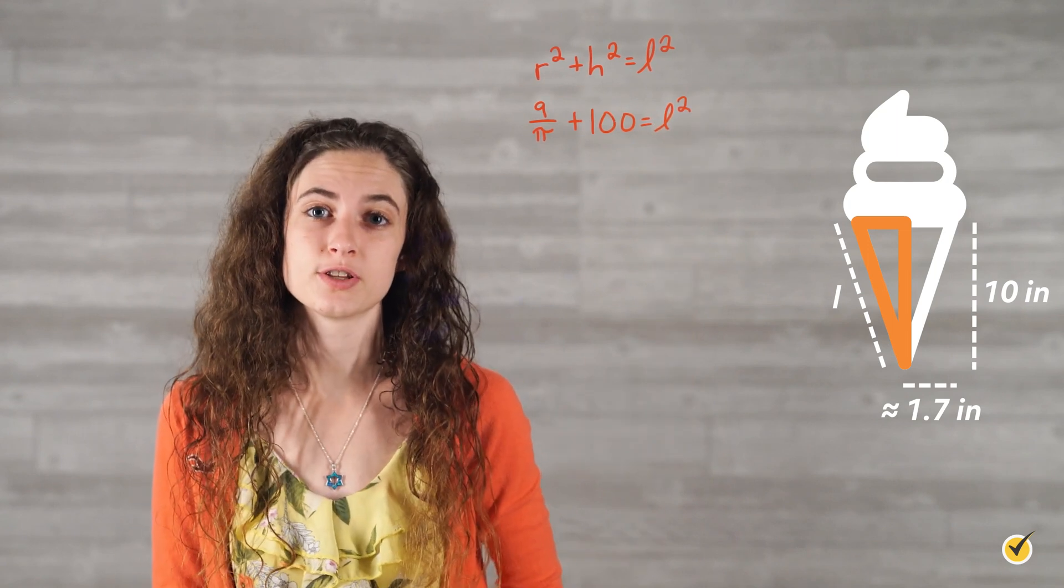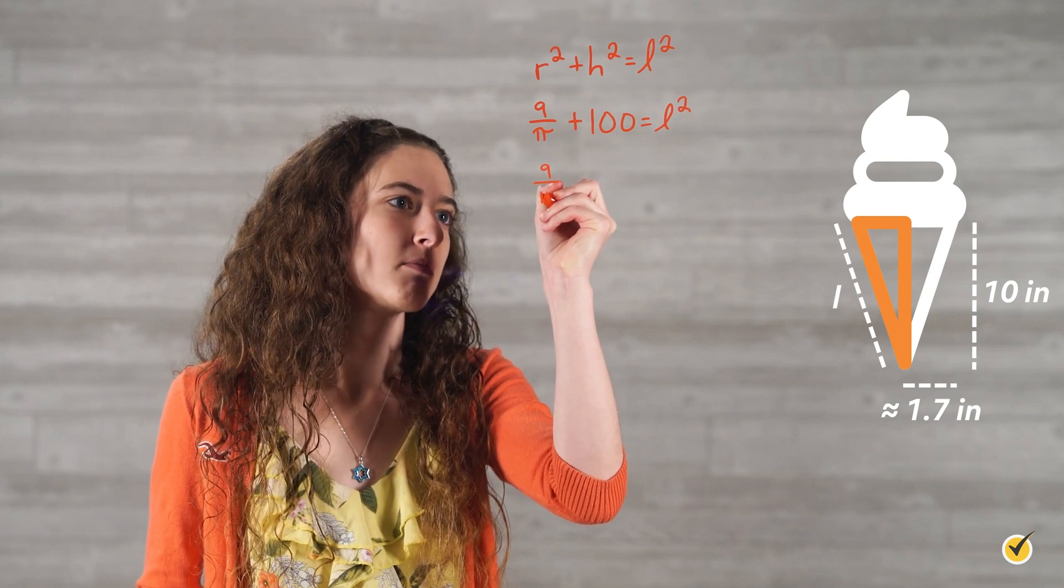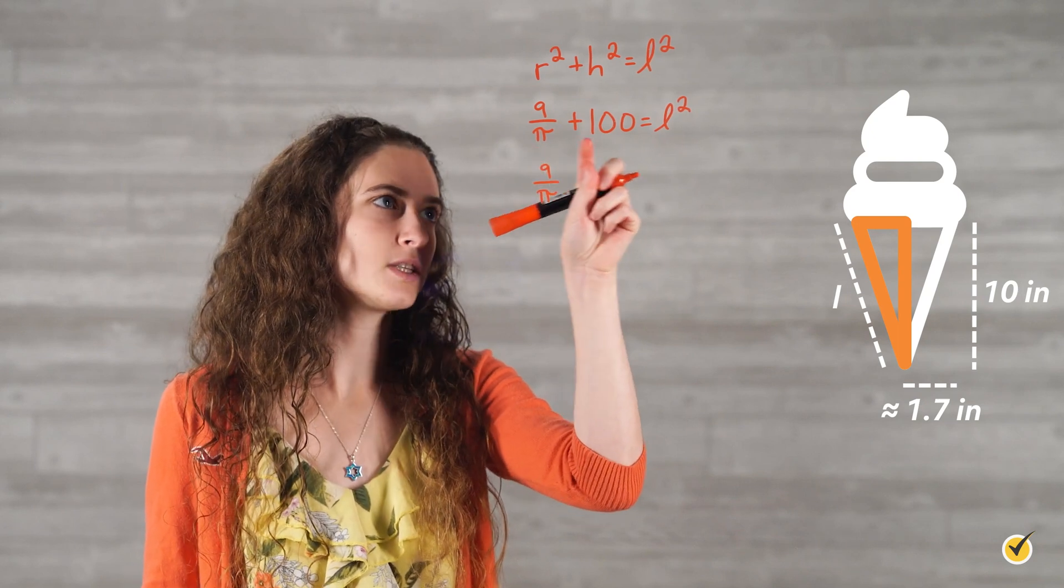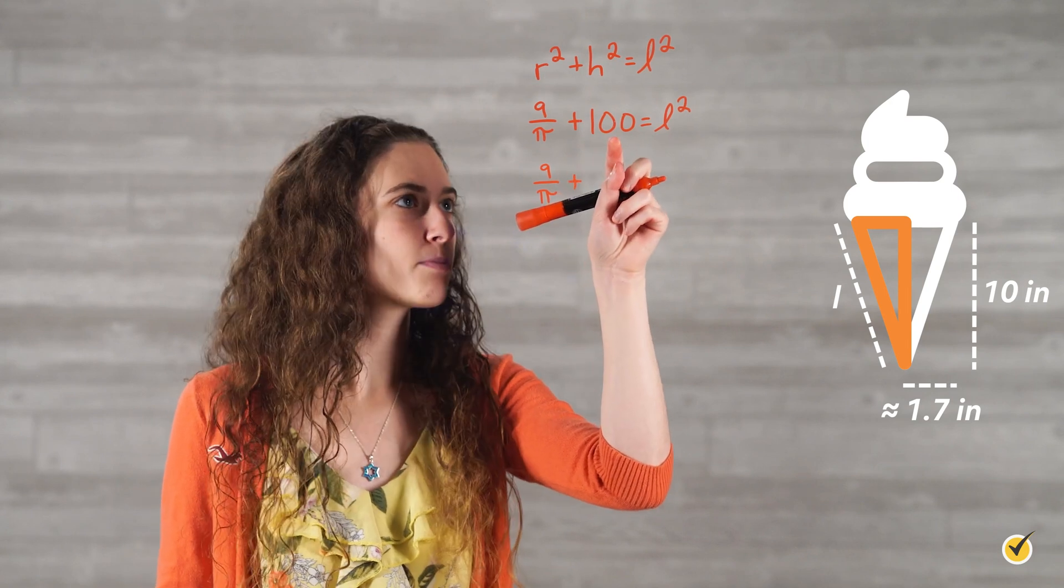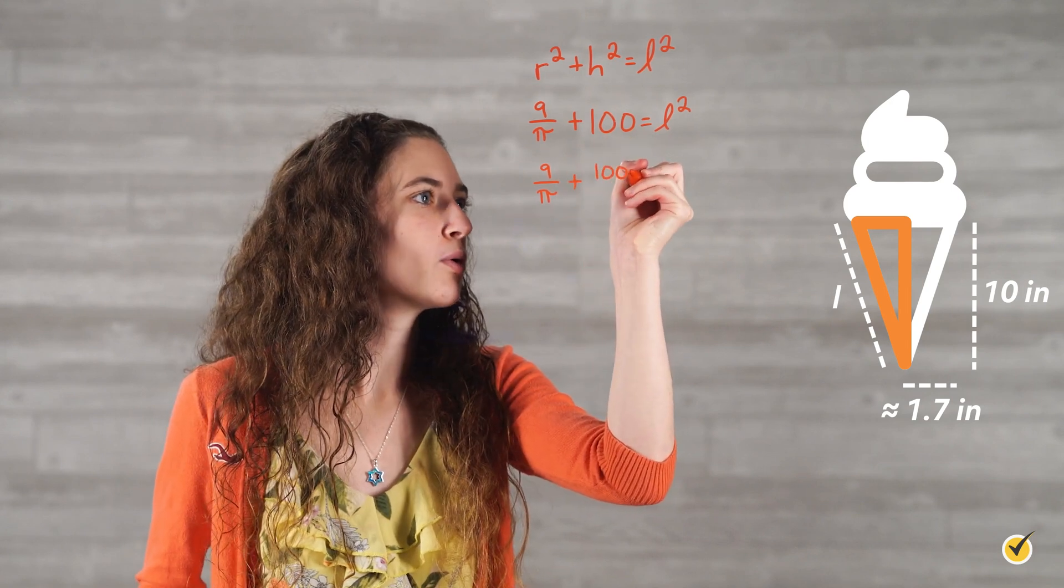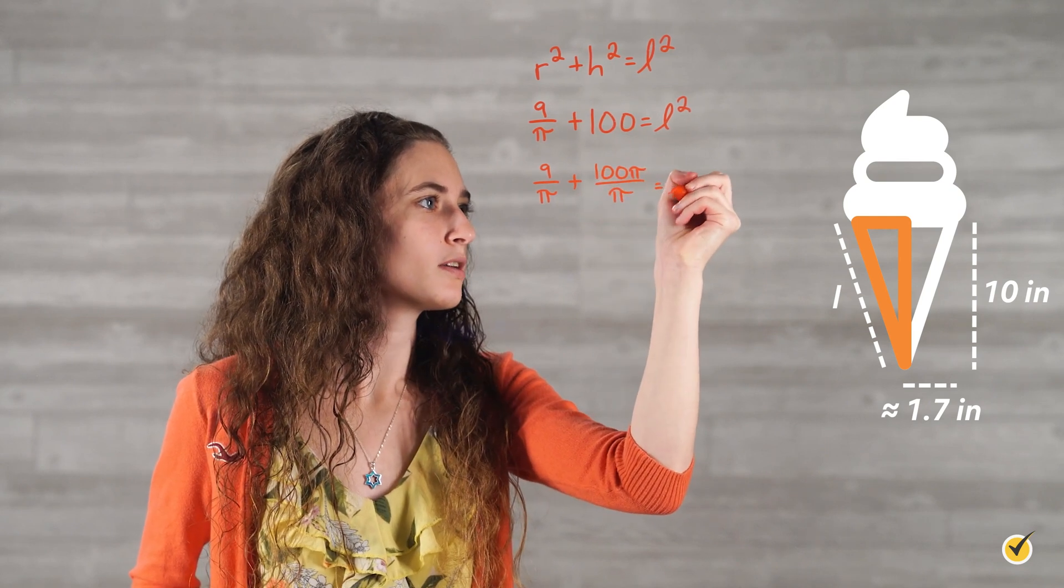Now, we're going to want to simplify our addition on the left side. We're going to keep 9 over pi the same, and then we're going to need a common denominator for both of these parts. We're going to do that by multiplying 100 by pi over pi. When we do that, we get 100 pi over pi equals l squared.